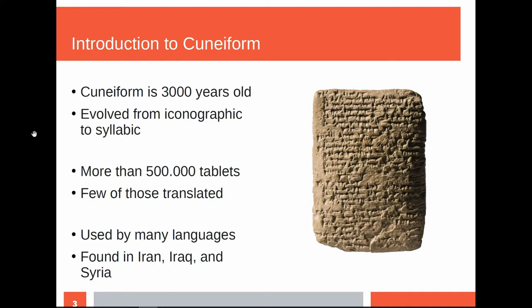For us computer scientists, one of the problems is that we cannot stem the symbols — we cannot find where a word starts and the word ends. So we cannot say, for example, that this constellation of symbols always is one single word. We always have to take complete sentences, complete lines of cuneiform script and analyze those. We call it that the tokenization depends on the meaning, on the context, and the grammatical case of the written cuneiform. Another problem is that cuneiform is not necessarily written from left to right.